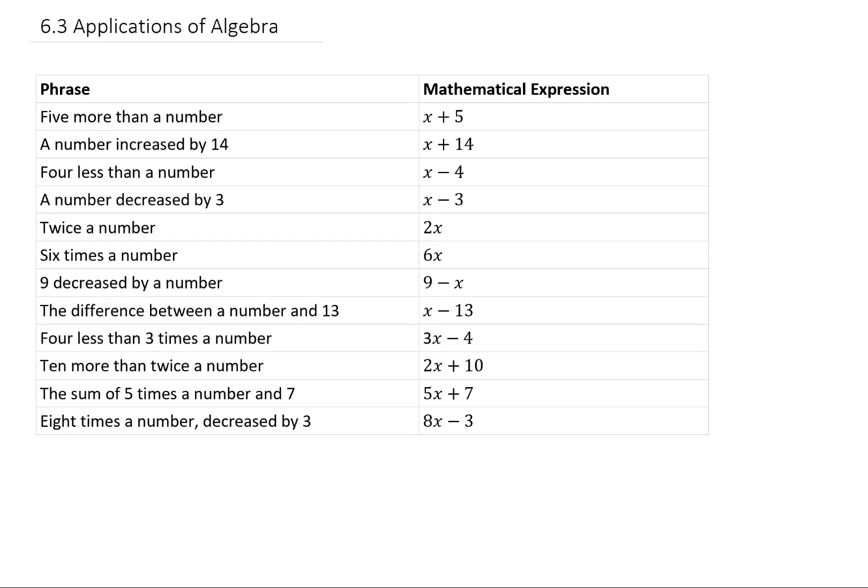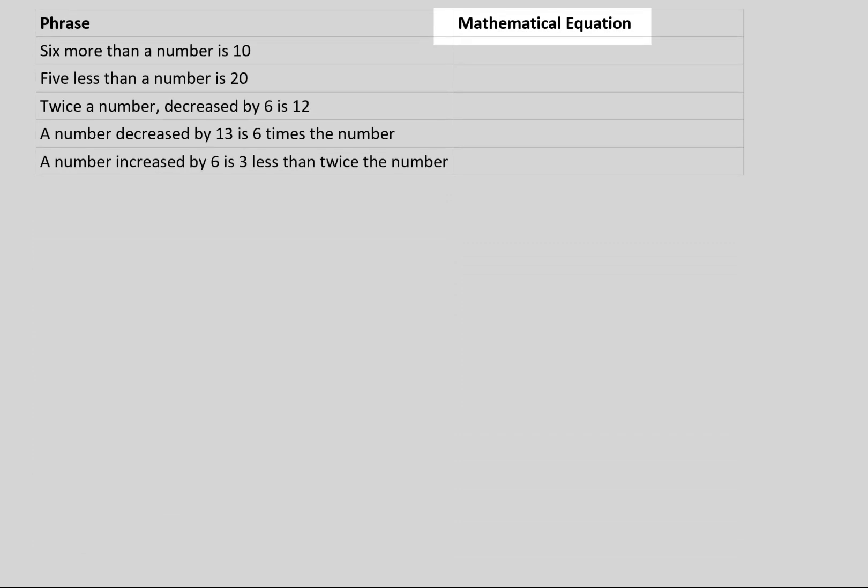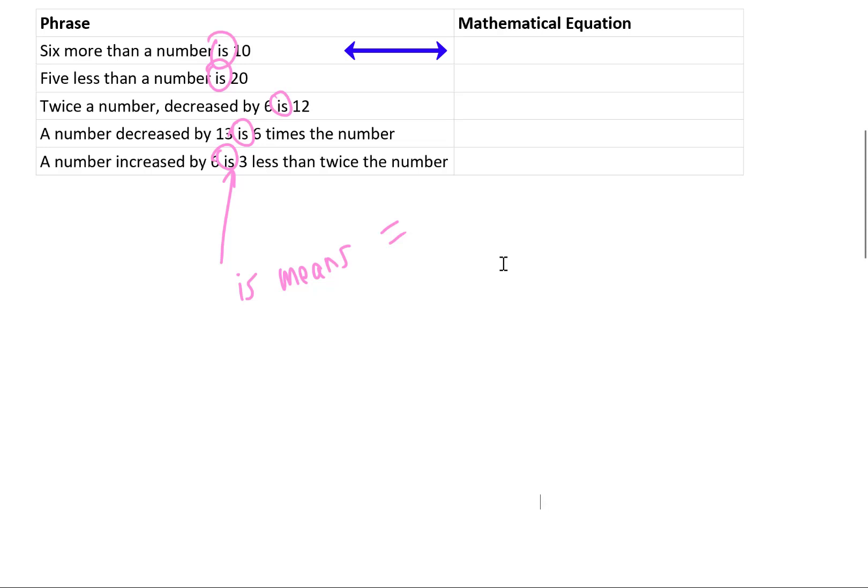Now each of these phrases became a mathematical expression, but sometimes phrases can become mathematical equations. The way that we can see at first glance that each of these phrases is going to become an equation rather than an expression is the existence of this word 'is' in each one of these phrases. The word is is going to represent an equal sign in our equation. So, for example, 6 more than a number is 10. 6 more than a number, we can start with a number and add 6 to it, and we're going to say that is 10, so we're going to set that equal to 10. Now we have a mathematical equation that we could solve for x.